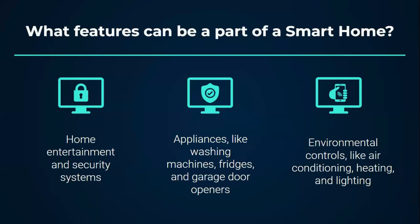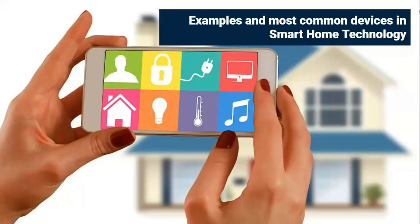What features can be a part of a smart home? Home entertainment systems and security systems, appliances like washing machines and garage door openers, as well as environmental controls such as air conditioning, heating, and lighting. Let's take a look at the examples and most common devices in smart home technology.